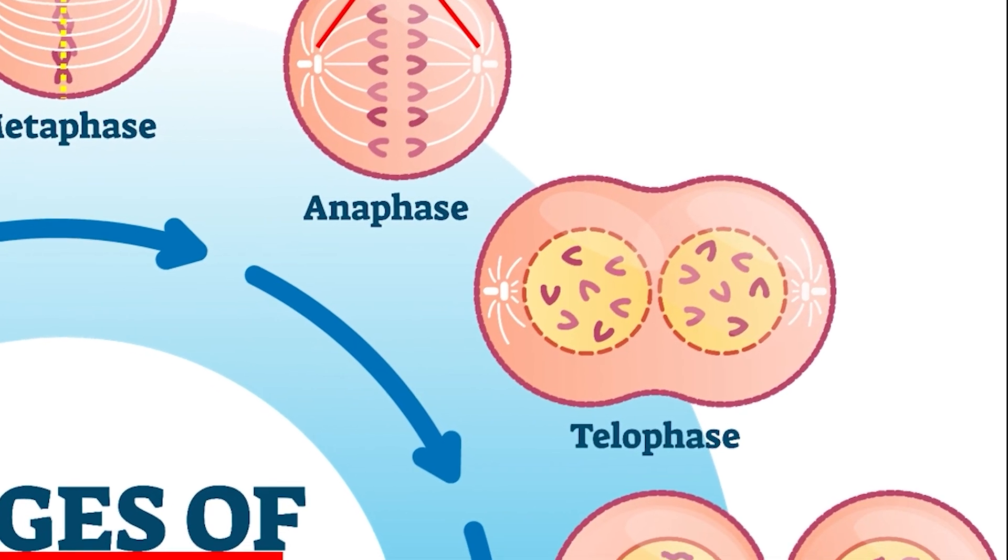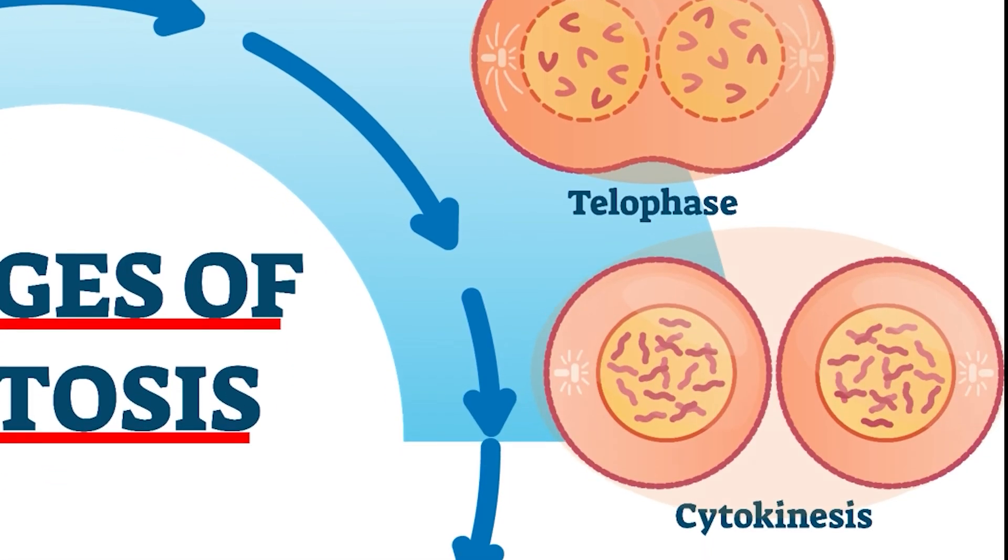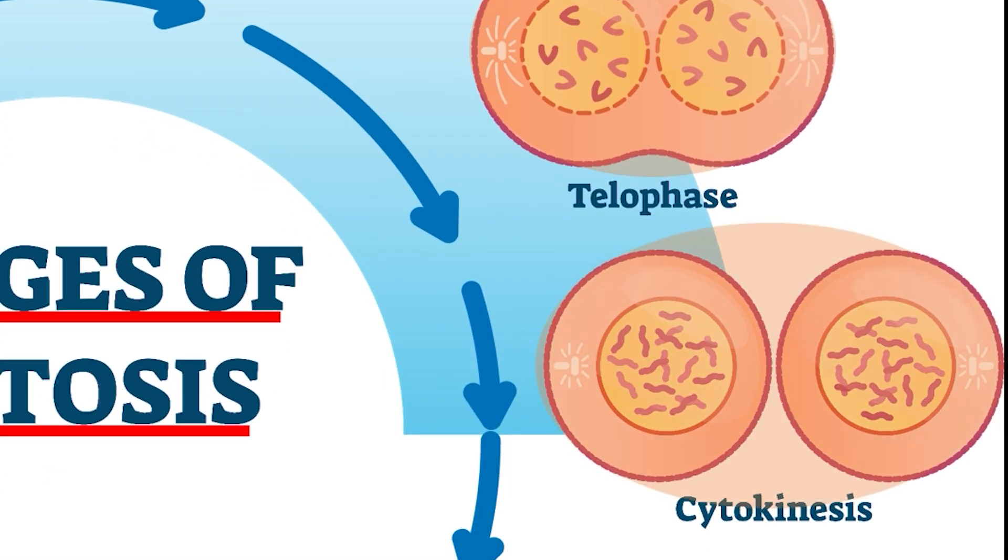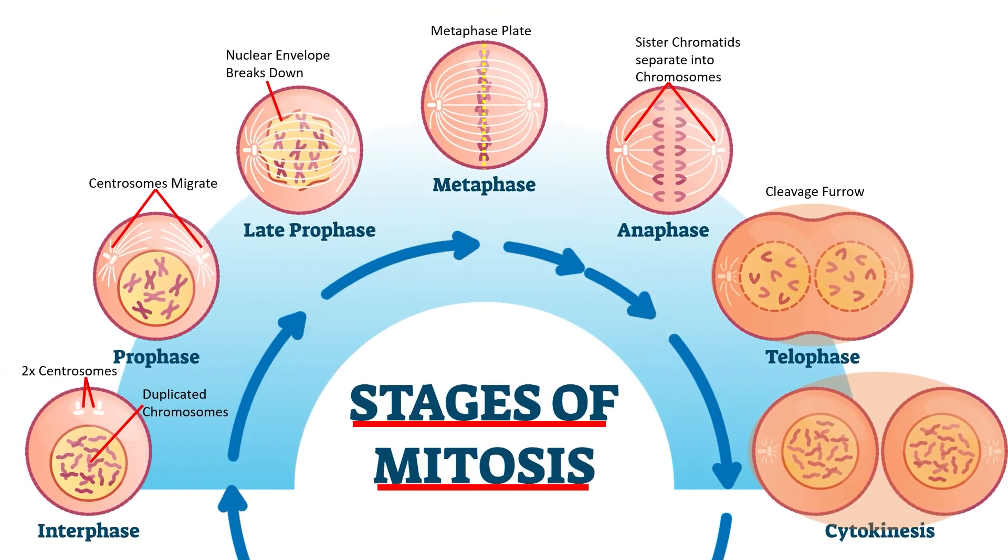After anaphase comes telophase. During telophase, the nuclear envelope reforms around each nucleus, and a cleavage furrow forms a band around the cell and starts to pinch the cell in two. The final stage, cytokinesis, is simply the full separation of the two new daughter cells. Each of these new cells will then enter interphase, and the cell cycle will start again.